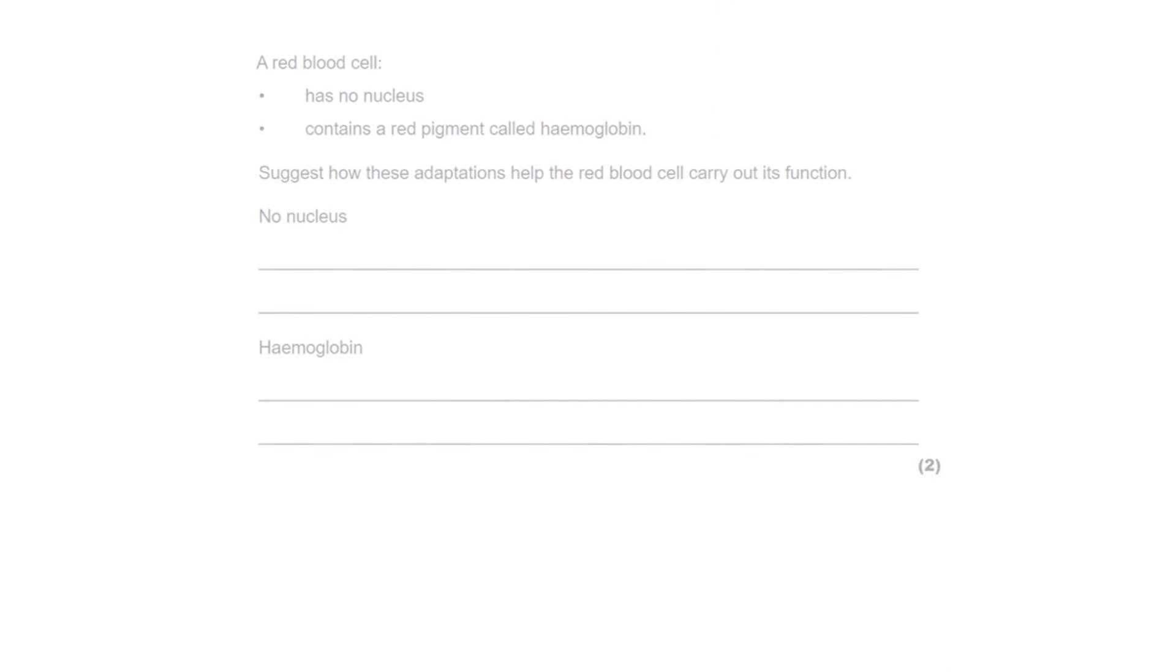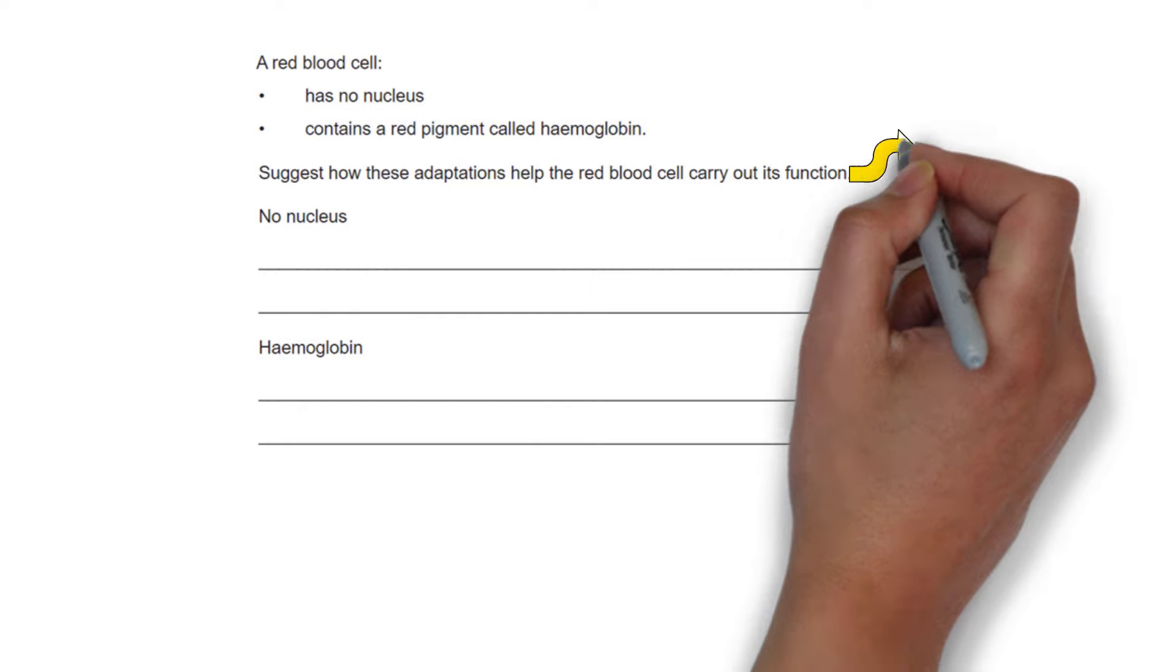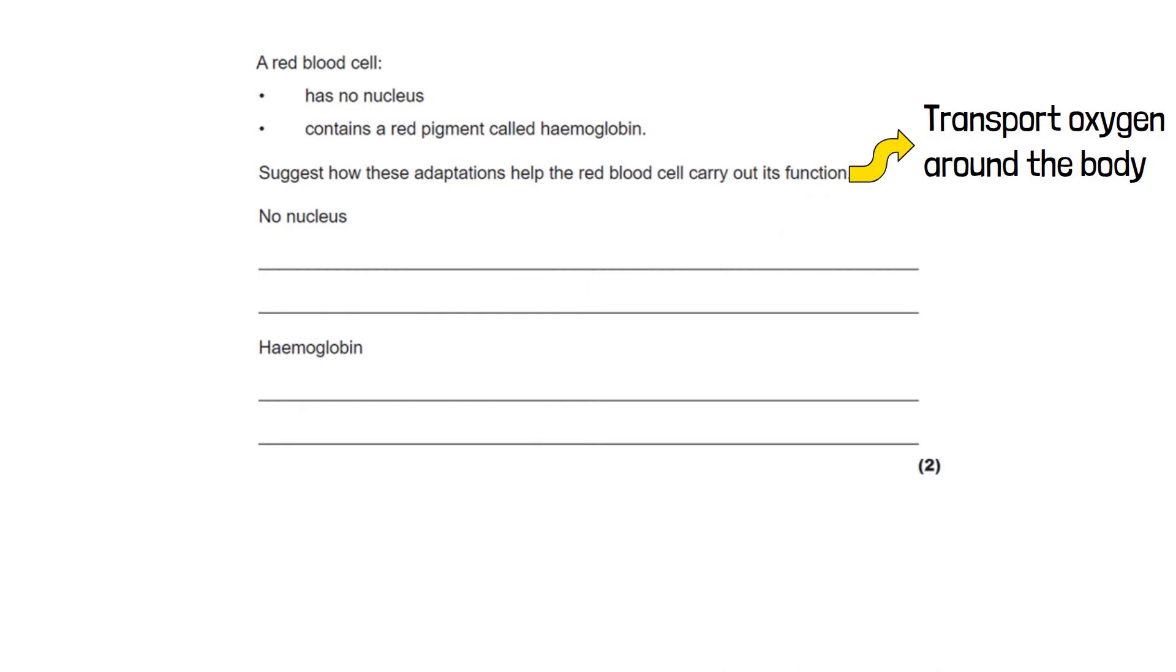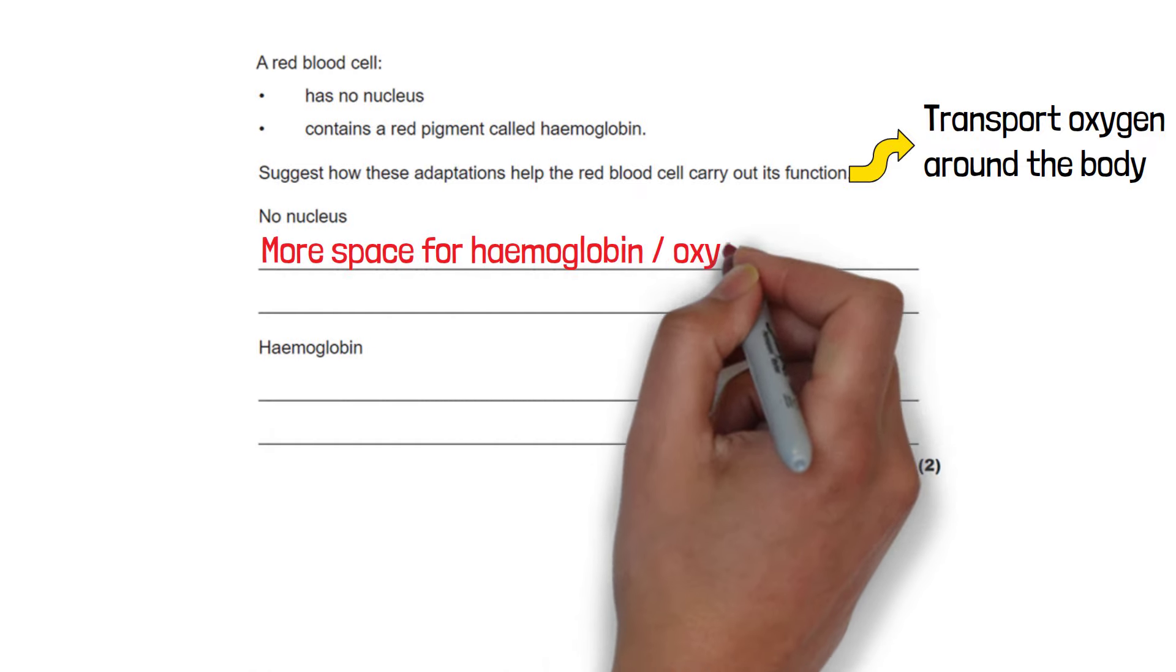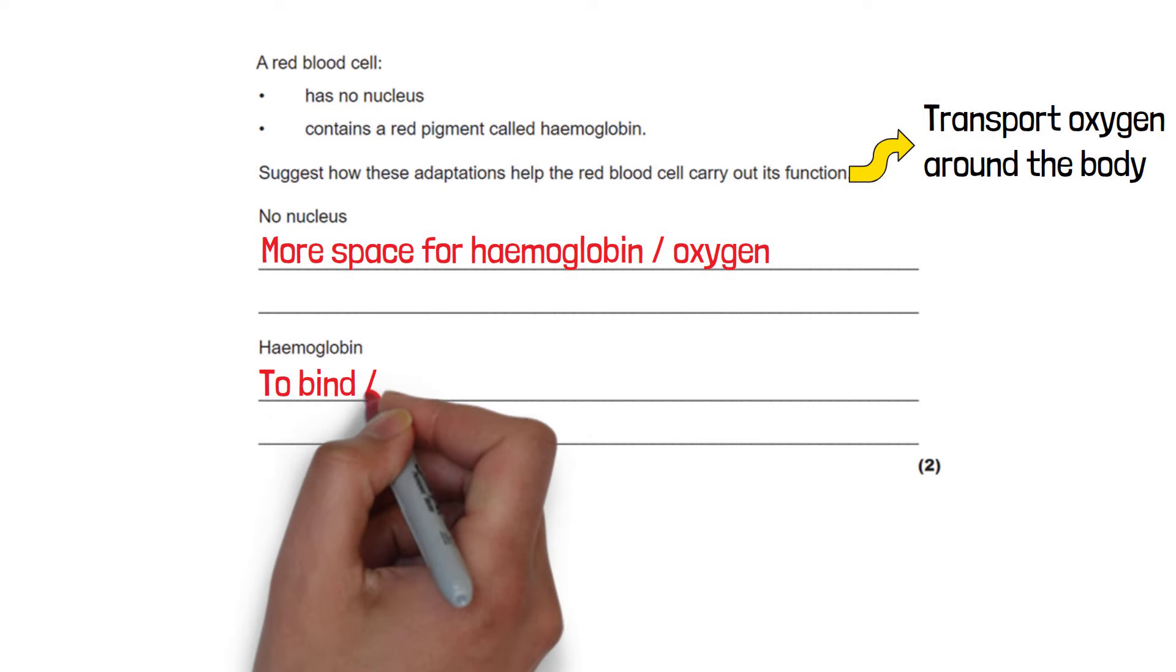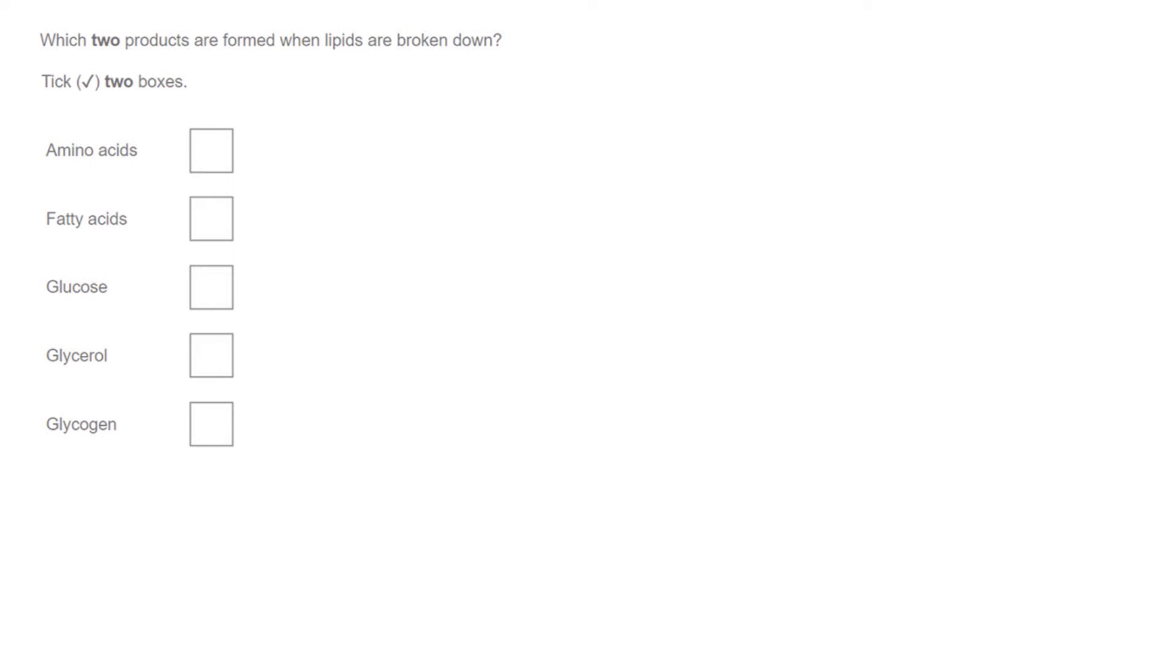The next question gives us some information about a red blood cell. It says suggest how these adaptations help the red blood cell carry out its function. But what is the function of a red blood cell? It's to transport oxygen around the body. So if it has no nucleus that must mean there is more space for the hemoglobin or for the oxygen. The red pigment called hemoglobin is the thing that binds or carries the oxygen.